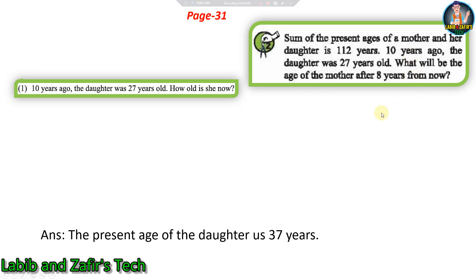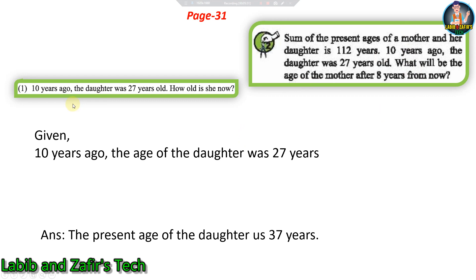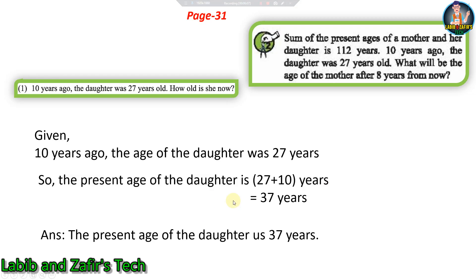First sub-question: Ten years ago the daughter was 27 years old — how old is she now? We need the present age of the daughter. Given that ten years ago she was 27 years old, we add 10 to get the present age. Present age of daughter = 27 plus 10 = 37 years. Answer: the present age of the daughter is 37 years.